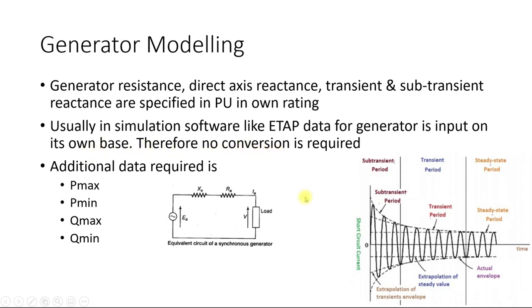A good thing regarding generator data in ETAP is that whatever data you have from the nameplate rating, you can simply take this data and put it in your ETAP model. Once you have given these reactances, the additional data you will require in ETAP or any other software for solving the case is the Pmax and the Pmin.